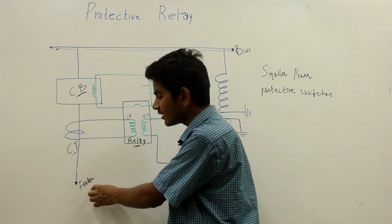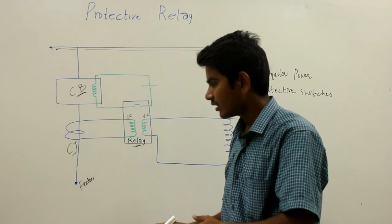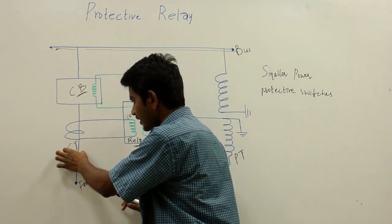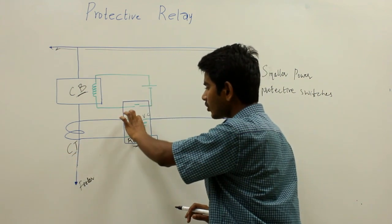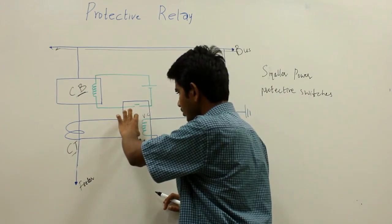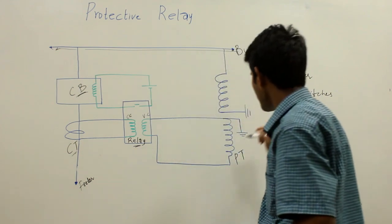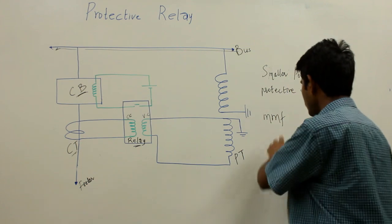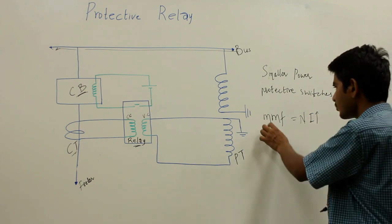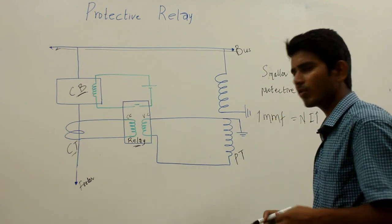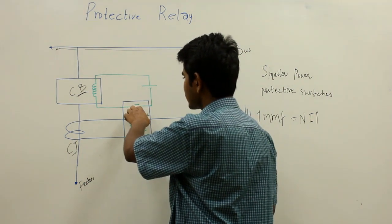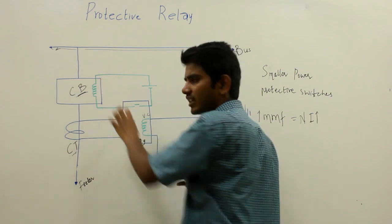Now whenever there is a fault in the feeder circuit, it indicates a high value of current is drawn. The proportionate secondary current of the current transformer will flow through the current coil of the relay. Whenever there is a high current flowing through the current coil, the MMF of the coil increases. We know that MMF of a coil is given by MMF = N × I. As the current increases, the MMF increases and this is sufficient enough to mechanically close the normally open contact of the DC trip coil circuit.